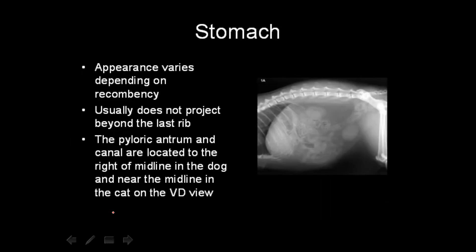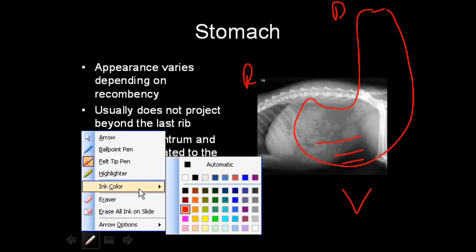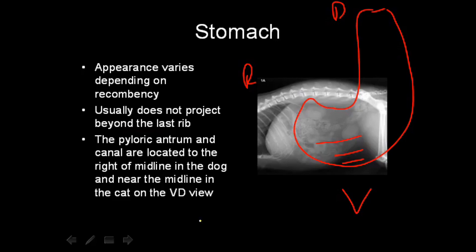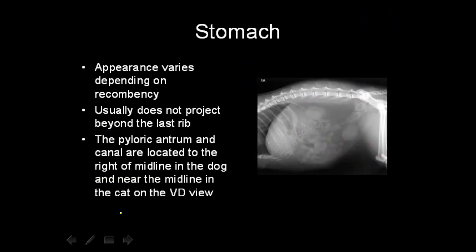The stomach's appearance varies according to the patient's position. The stomach is shaped like a J — with the fundus on the left and the pylorus on the right — and air always goes up. So if the animal is on its back, air will go to the pylorus. If on the right side, air goes to the fundus and body. If on the ventral aspect, air goes dorsally to the fundus. If on the left, air goes to the pylorus. How much air is visible depends on the position.